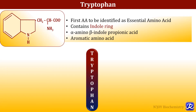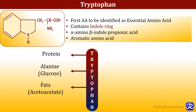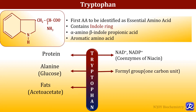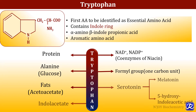Tryptophan is very important; on metabolism it leads to formation of alanine as well as fats, that is why it is referred to as both glucogenic as well as ketogenic. Various biologically important substances are derived from tryptophan like coenzymes of niacin — NAD+ and NADP+. Formyl group is also synthesized, which is useful in one carbon metabolism. Serotonin and melatonin are synthesized from tryptophan, and 5-hydroxyindole acetic acid and indican are the excretory products of tryptophan metabolism.